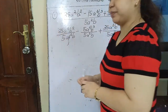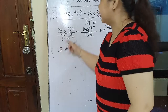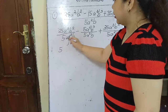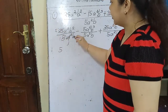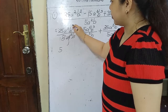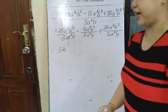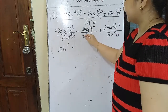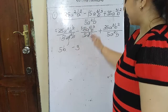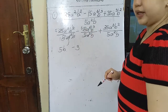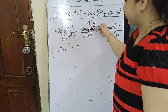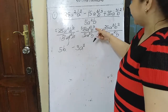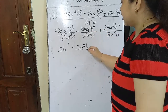Next, 25 divided by 5 is 5. We have a² and a² — they cancel. Then b and b² — b remains, giving 5b. Then negative 15 divided by 5 is 3. For the exponents: 4 minus 2, what remains on top is a². And b cubed minus b squared — b squared remains. So we get negative 3a²b².